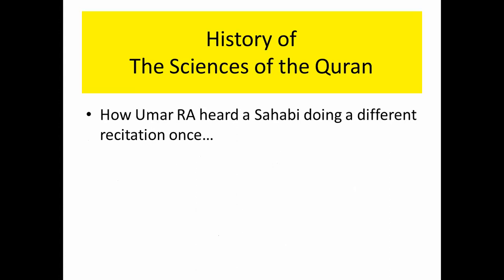Another very famous incident was when Umar radiyallahu anhu heard a Sahabi doing a different recitation and got very angry. He grabbed that Sahabi by the neck and said, 'How dare you change the recitation of the Qur'an?' The Sahabi replied that this is how the Prophet sallallahu alayhi wa sallam taught him to recite. They both went to the Prophet, who made both of them recite those ayahs and said to both of them: 'You both are correct — this is correct and that is correct.' The differences in recitation were present at the time of the Prophet and were taught by him.